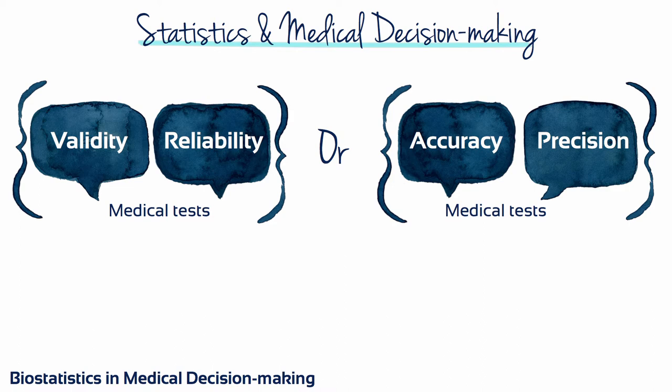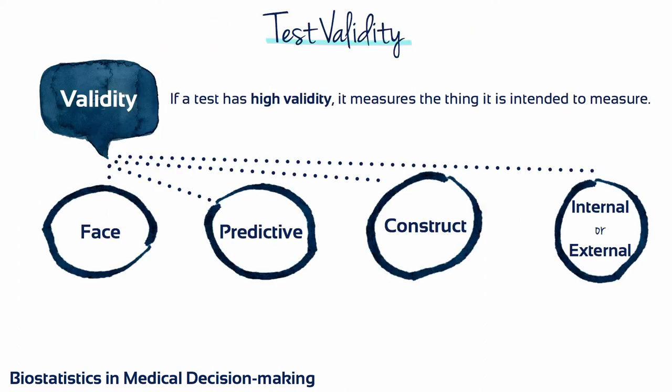Accurate tests are valid, and precise tests are reliable. Validity and reliability are independent of each other. When we ask whether a test is valid, we are asking whether the test assesses what it purports to assess. We want to have confidence that we are measuring what we intend to measure. That's why we want to use valid tests.